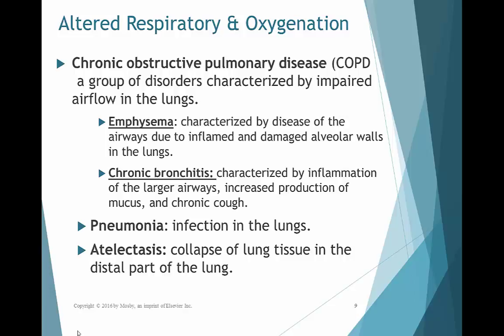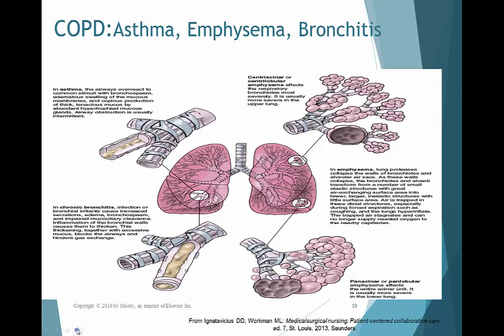Pneumonia can cause alterations in respiration and the ability of oxygen to exchange. We also have atelectasis — a small collapse of lung tissue — in which, if there is a collapse because of infiltrates and mucus plugs, there is no gas exchange taking place in the area distal to the collapse. This picture is to jog your memory of what asthma, emphysema, and bronchitis look like and how they impact the ability to get oxygen in and diffuse gas across the membrane.